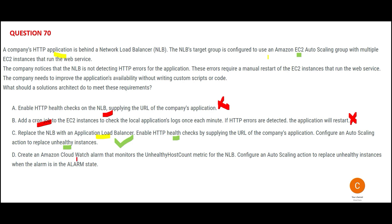Option D says you will use CloudWatch alarms to monitor unhealthy host metrics for the NLB and configure auto-scaling to replace unhealthy instances. This is again like ALB is meant for that. You are trying to create a custom solution using CloudWatch, which is not required. First, NLB will not support HTTP — that itself is wrong. Second, why create a custom solution when a standard solution is available?